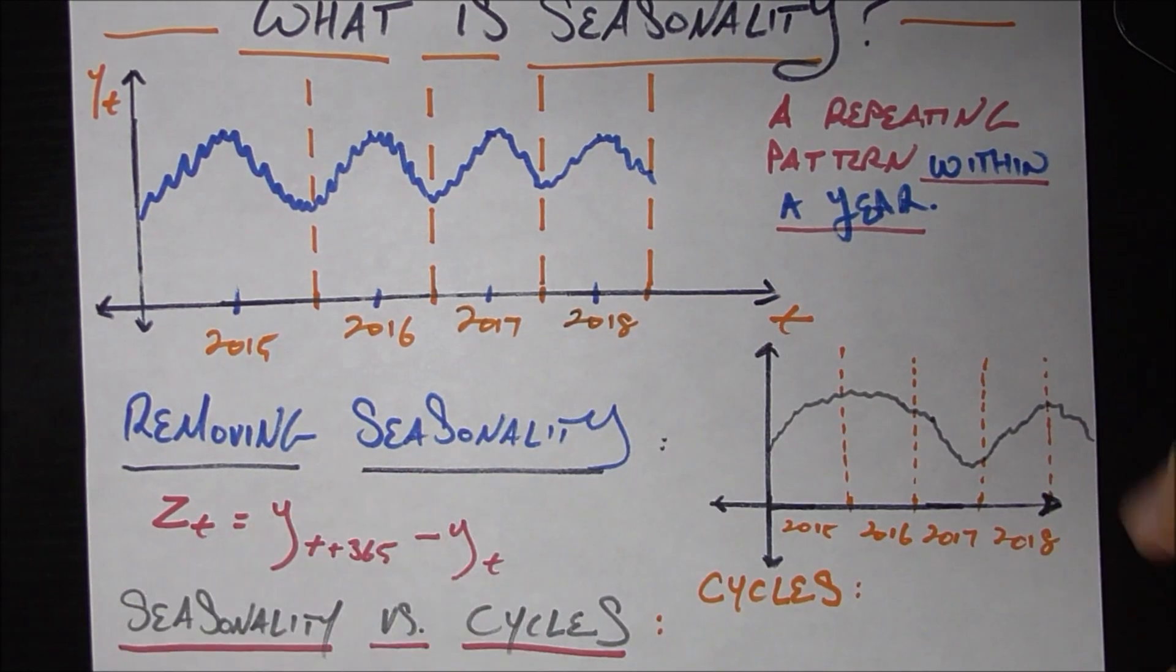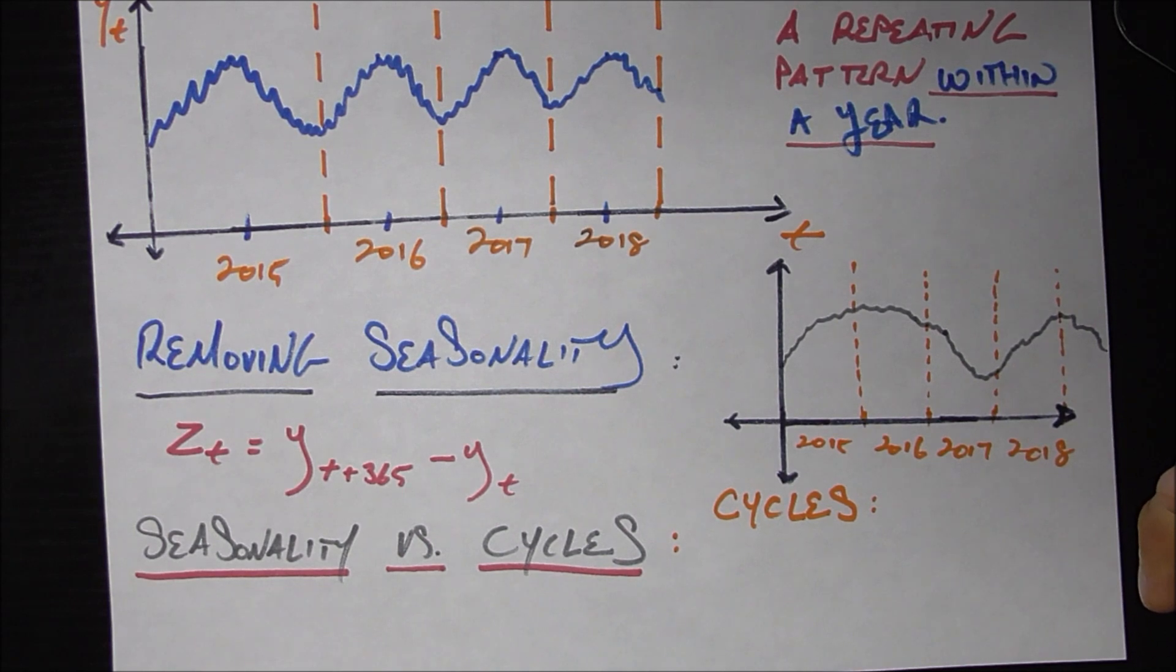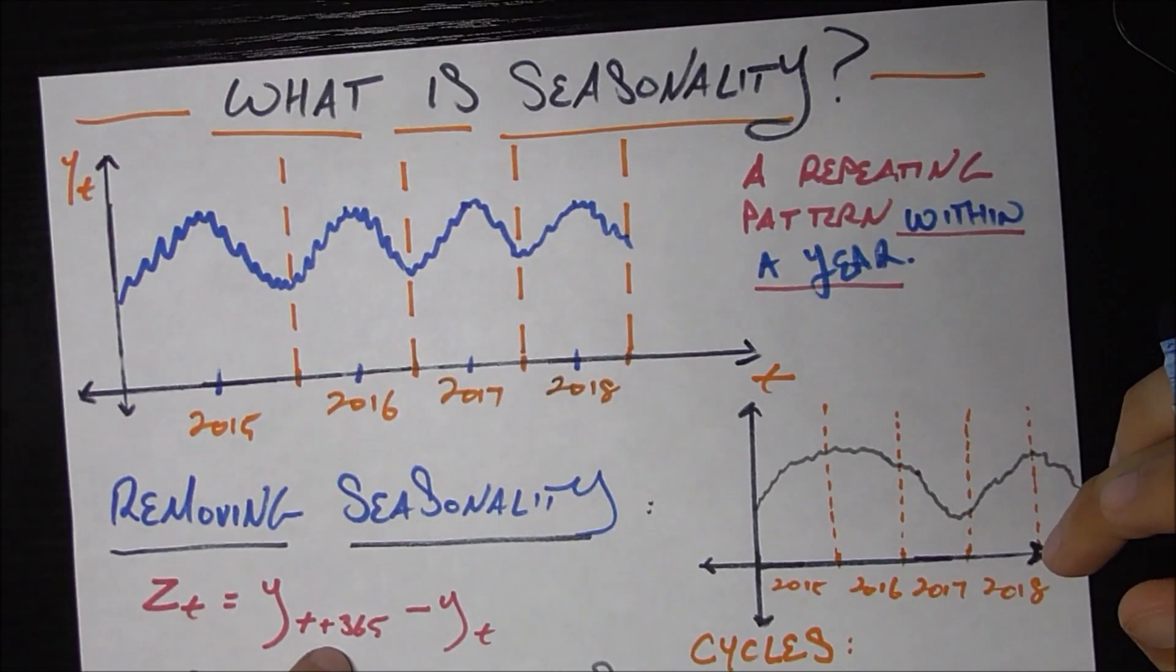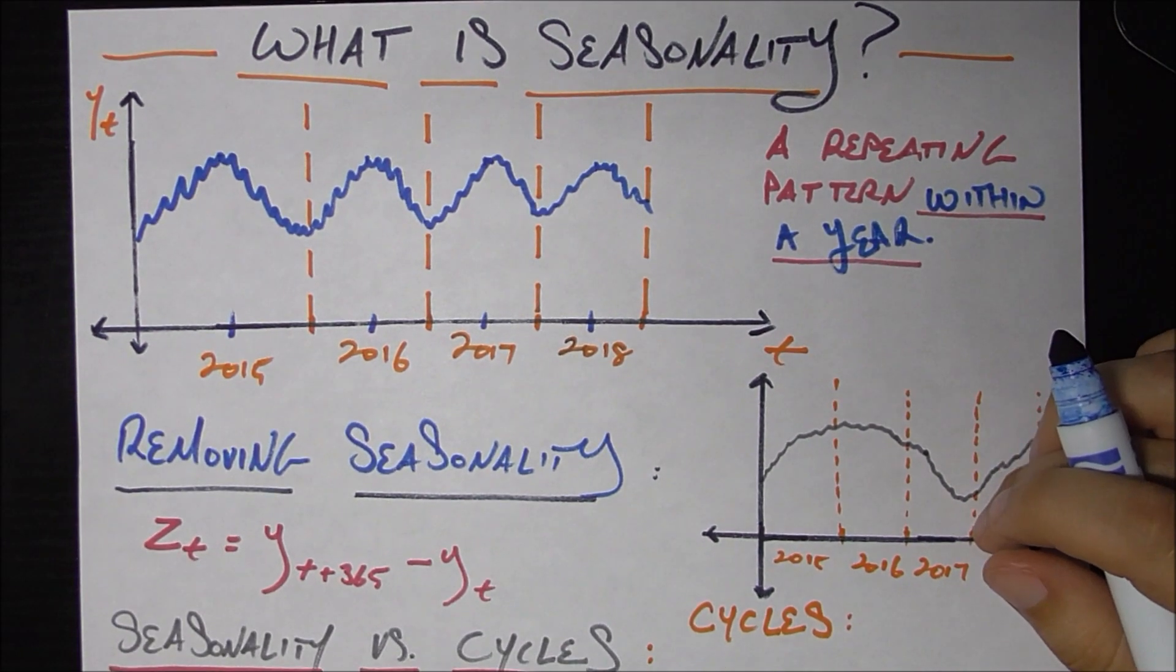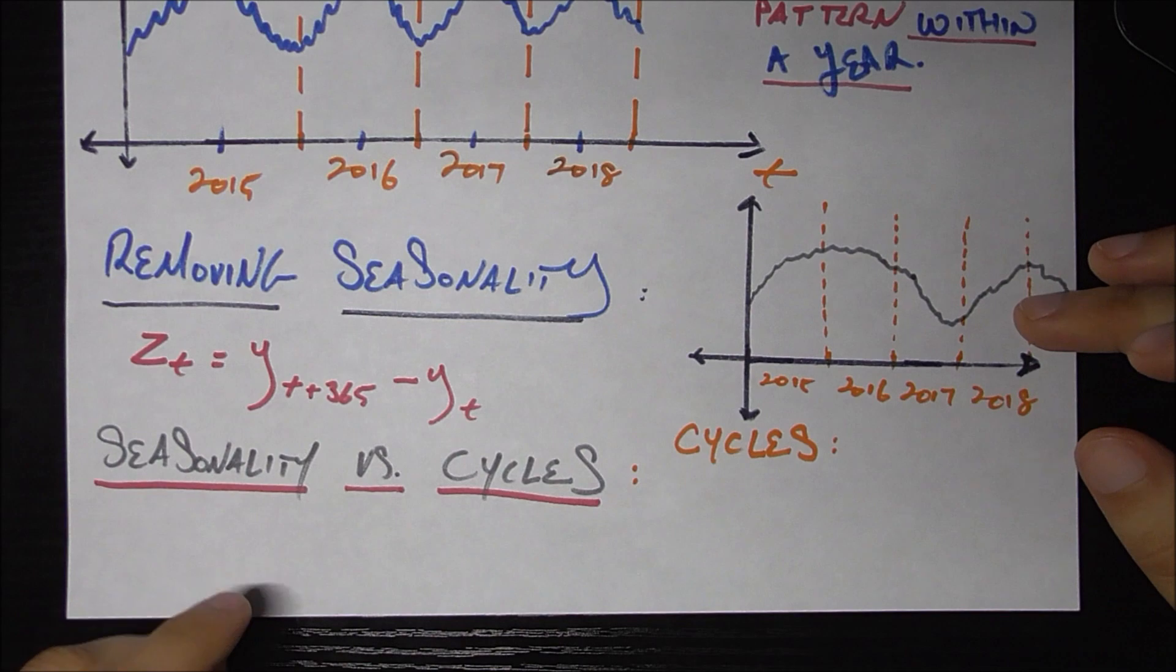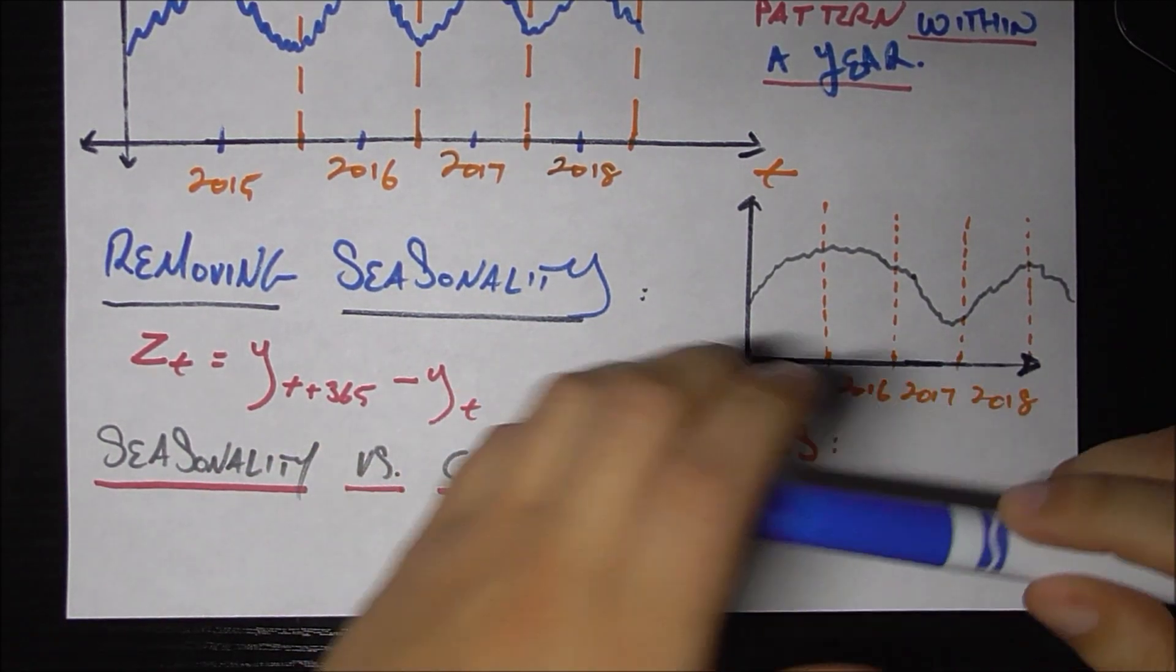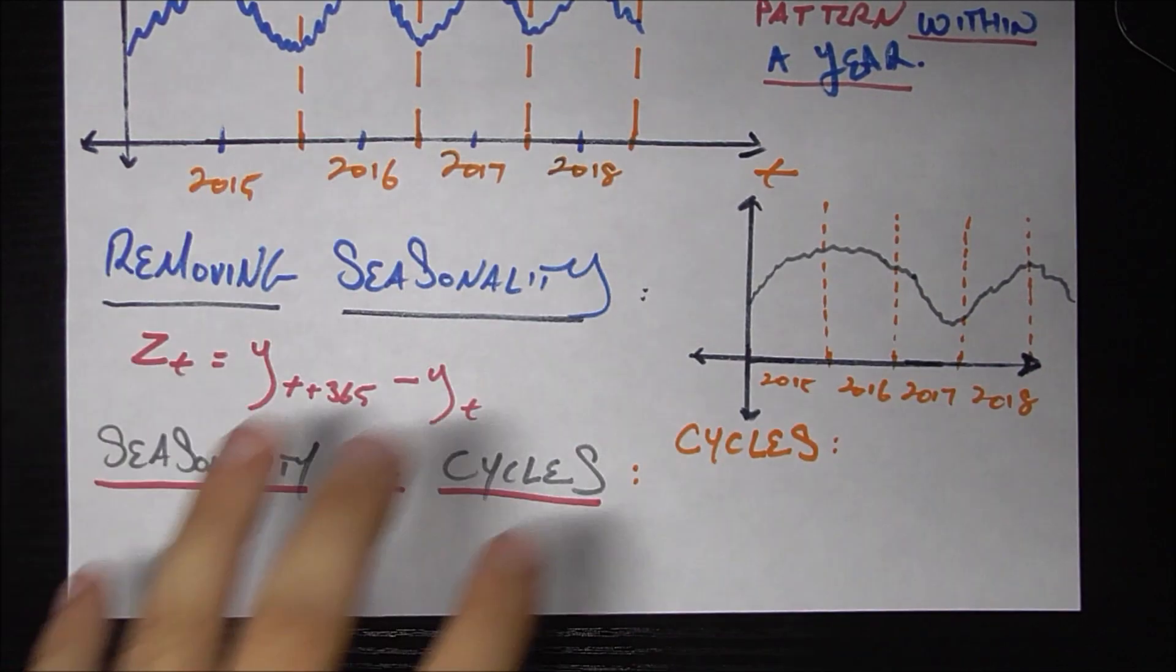That's what seasonality means in the context of time series. The second topic we'll talk about in this video is how to remove seasonality. So if you remember from our stationarity video, if a time series has a seasonal component, it's not stationary, which means we cannot just use our AR or MA or ARMA models as they are. So that means we would really like to remove the seasonal component from a time series so that we can use that new time series, which does not have seasonality and use our models on it.